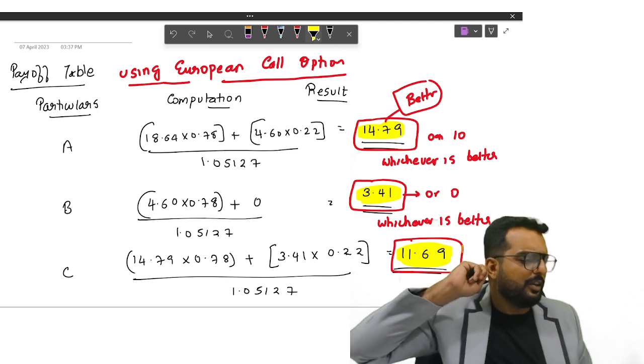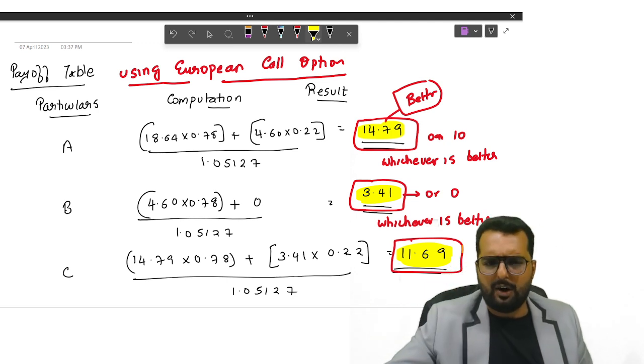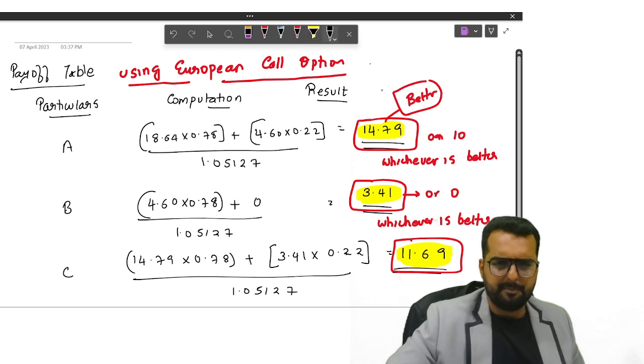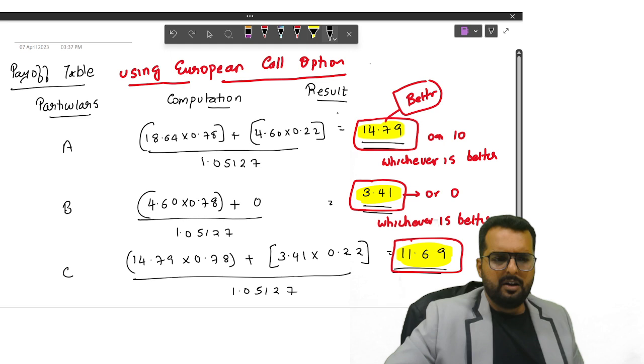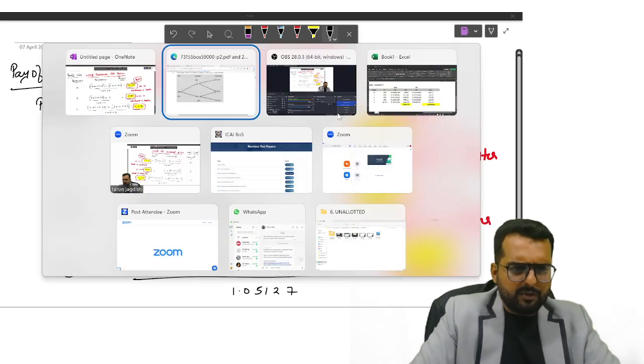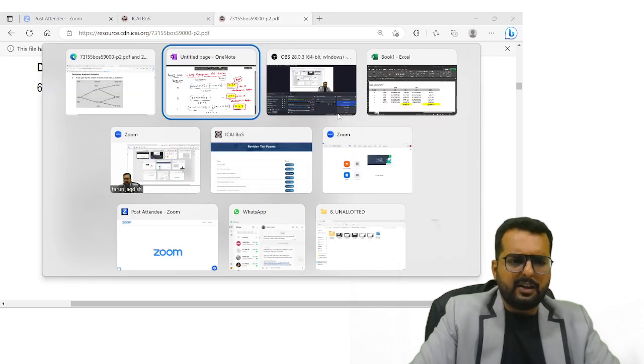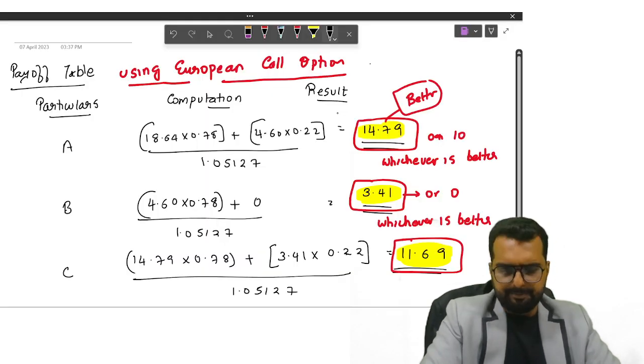We have done a similar question in my regular class friends. If you have attended my regular class, you would know it's exactly the same. Alright, so we are done with question number, what is the question number friends? We are done with question number 6 also.